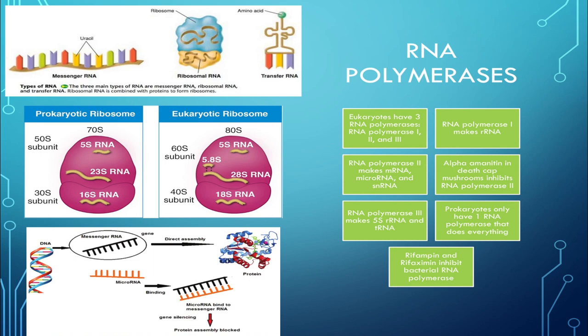Something interesting is that autoantibodies to RNA polymerase 3 can sometimes be seen in scleroderma, which is an autoimmune disease.